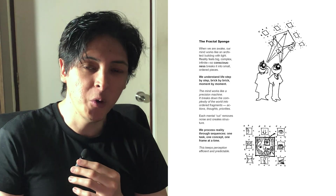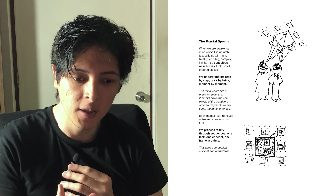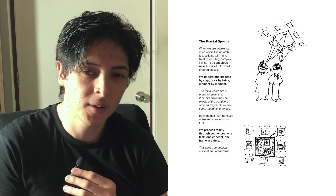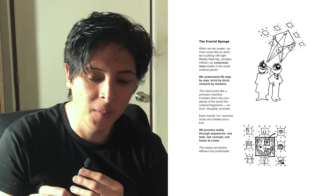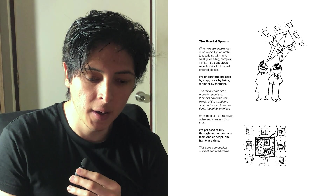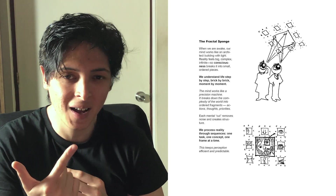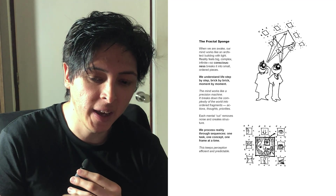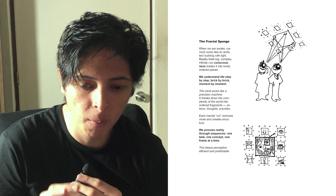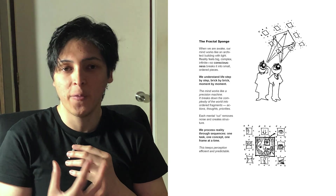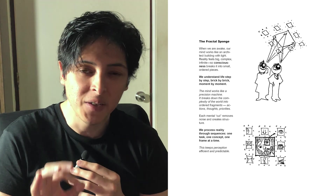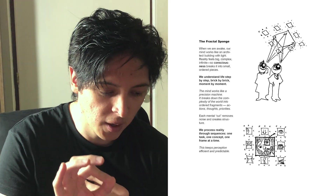For example, when you are talking with someone, you are decoding different parts of different frames of their face. In order to remember them, you decode their mouth, their ears, their eyes, and then understand the big picture — the whole face. The mind works like a precision machine. It breaks down the complexity of the world into ordered fragments, ordered fractals, actions through priorities. We process reality through sequence: one task, one concept, one frame at a time. There are different levels of consciousness across different levels of fractals.